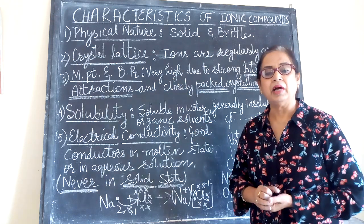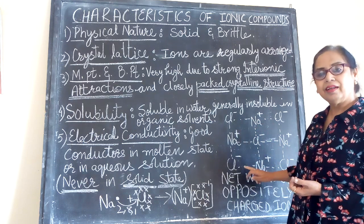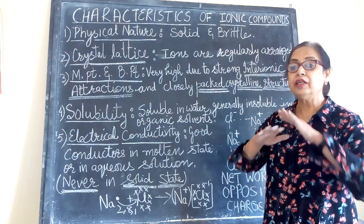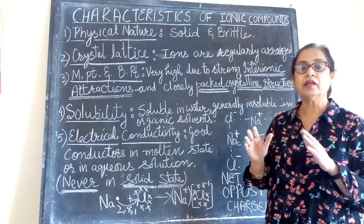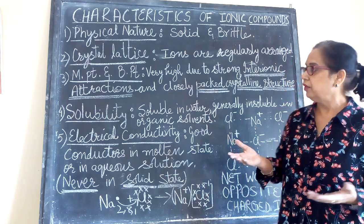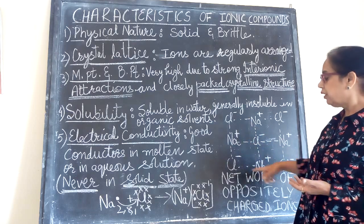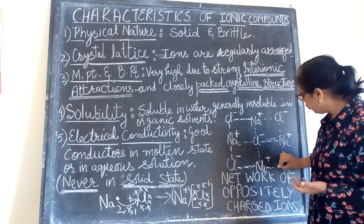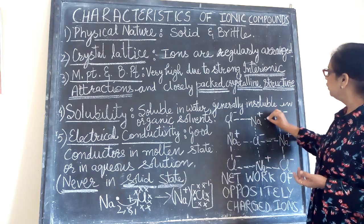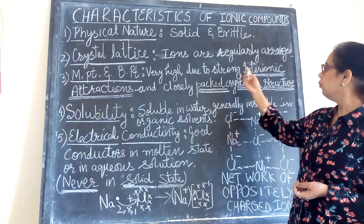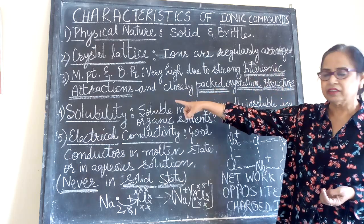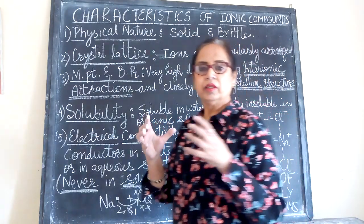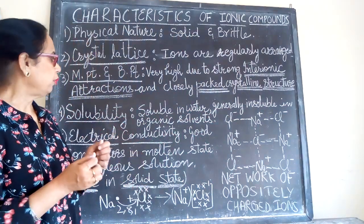The next property is melting point and boiling point. Because there are strong inter-ionic forces of attraction, melting or boiling an ionic compound requires breaking these forces. When something is very strong, you need a large force to break it, so a lot of energy is required to break the inter-ionic forces between the oppositely charged ions. Therefore, these compounds have very high melting points as well as boiling points, due to strong inter-ionic attractions between oppositely charged ions and their closely packed crystalline structures.